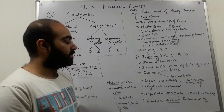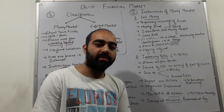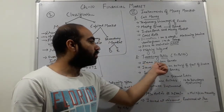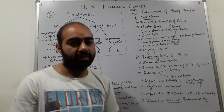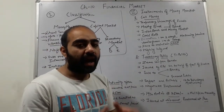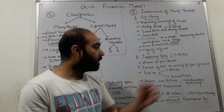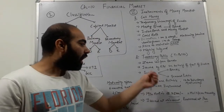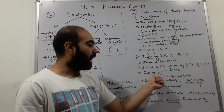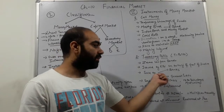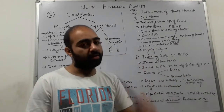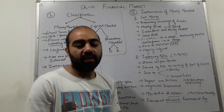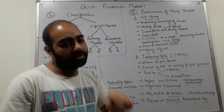The second instrument of the money market is the Treasury Bill, also known as a T-bill. Treasury bills are also called zero coupon bonds. They are issued by the RBI on behalf of the Government of India to raise money from the public. Treasury bills can be sold in the market by banks or general companies. The time duration ranges from 14 days to 364 days.